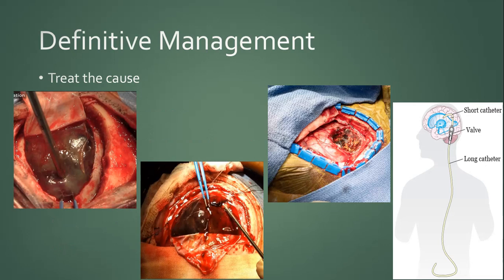Definitive management aims to treat the cause. For traumatic intracranial hematomas, the hematoma is drained. Brain tumors or neoplasia require surgical excision. In cases of hydrocephalus, CSF diversion procedures are performed, such as external ventricular drain, ventriculoperitoneal shunt, or endoscopic third ventriculostomy. These represent the definitive management procedures for raised intracranial pressure.